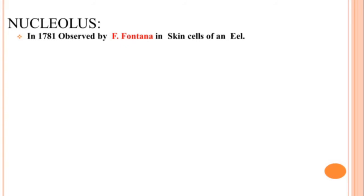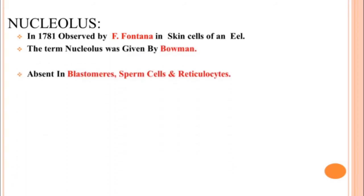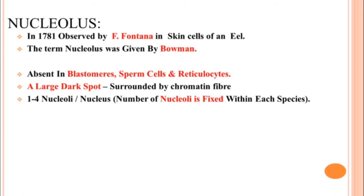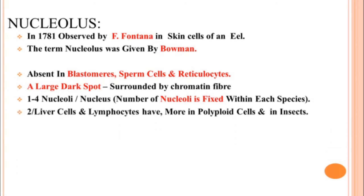Let us discuss the nucleolus, a very important structure in the nucleus, first observed by Fontana in 1781 in skin cells of an eel. The term nucleolus was given by Bowman. Nucleolus may be absent in cells like blastomeres, sperm cells, and reticulocytes. These look like large dark spots surrounded by chromatin fibers — though it looks like a membrane, it is not one. Generally a cell has a single nucleolus, but some cells may have one to four. The nucleolus number is fixed within each species — for example, in liver cells and lymphocytes they have two per cell, while in polyploid cells and insects some cells may have more than two.